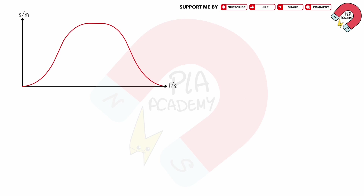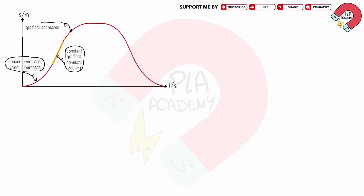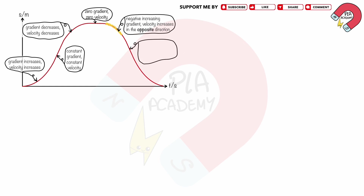The graph shows how the displacement of an object moving in a straight line varies over time. Recall that the gradient of a displacement-time graph is velocity. As the gradient increases, velocity increases. As the gradient is constant, velocity is constant. As the gradient decreases, velocity decreases. As the gradient is zero, velocity is zero. As the gradient is negative and increasing, velocity is increasing in the opposite direction. As the gradient is negative and constant, velocity is constant in the opposite direction. As the gradient is negative and decreasing, velocity is decreasing in the opposite direction.